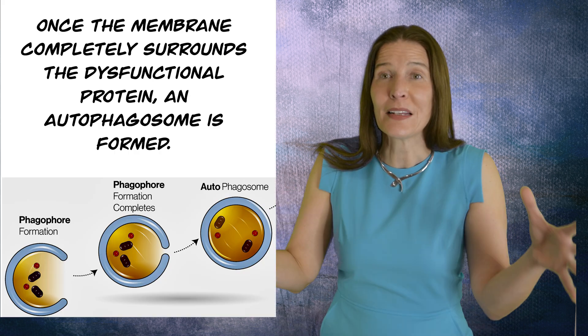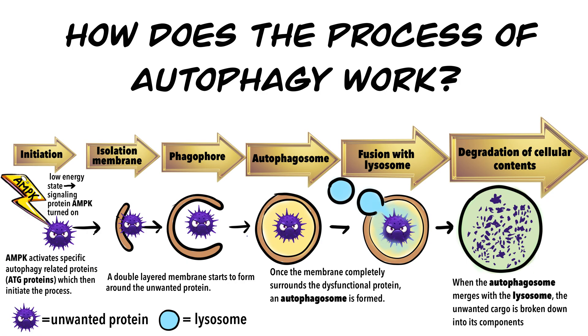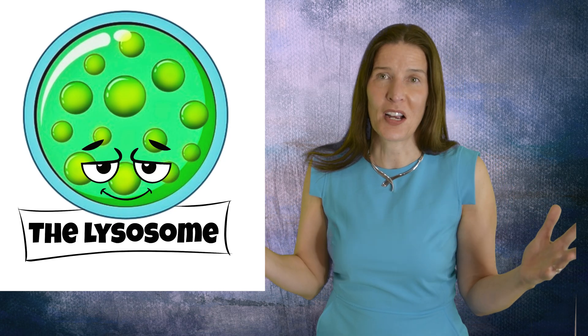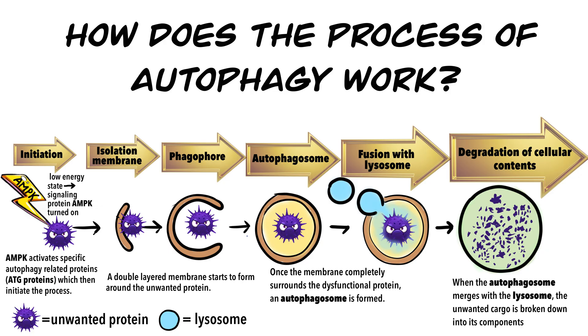Once the membrane completely surrounds the dysfunctional protein, an autophagosome is formed. The autophagosome travels to a lysosome and then merges with it. A lysosome is a bubble full of enzymes capable of breaking down a wide range of compounds inside the cell. When the autophagosome merges with the lysosome, the unwanted cargo is broken down into its components, whether that be peptides, carbohydrates, or nucleic acids. These building blocks are then released into the cytoplasm of the cell to be used for other purposes.